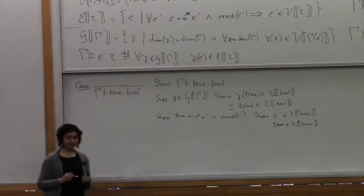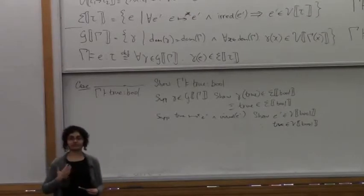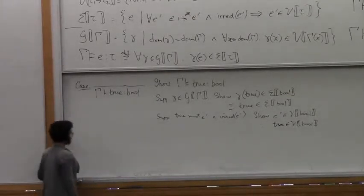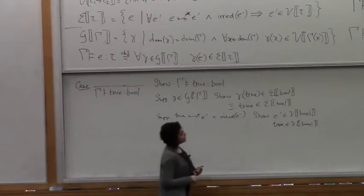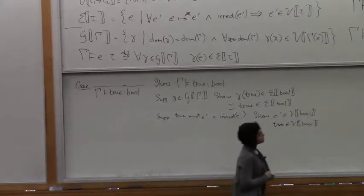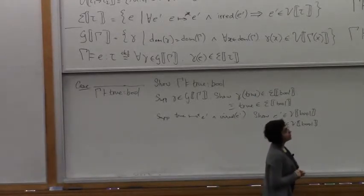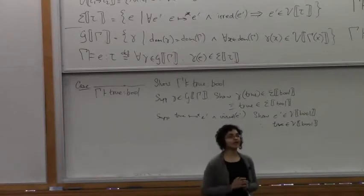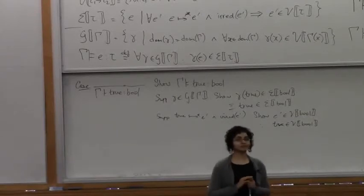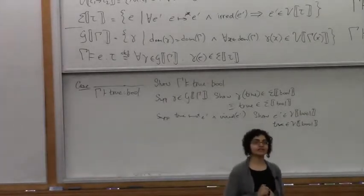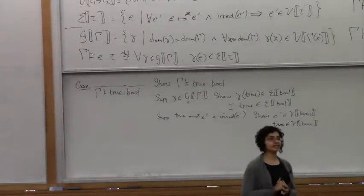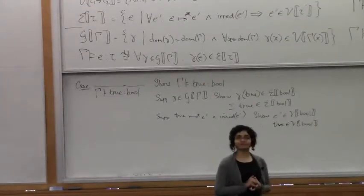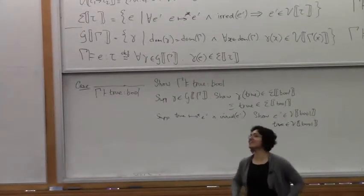So we just wanted to unwind the definitions to show you how that goes. Now, should we do the lambda case? How many people did the proof of strong normalization last night — the lambda case?